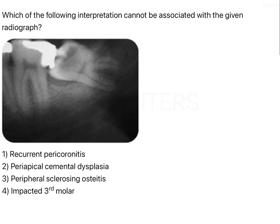Looking at the features in this radiograph: number one, you can see it is probably a third molar, positioned almost horizontally with the roots pointing towards the ramus. It is a mandibular molar — bi-rooted, which confirms it is a mandibular tooth. There is also a radiolucency just below the crown. Given the options, we can identify for sure that this is an impacted tooth.